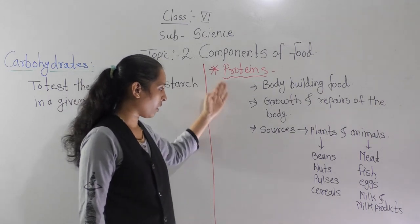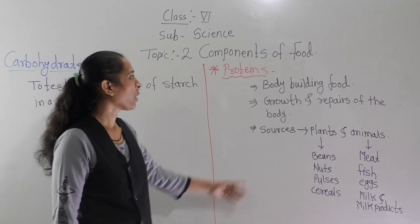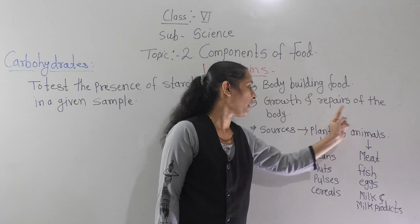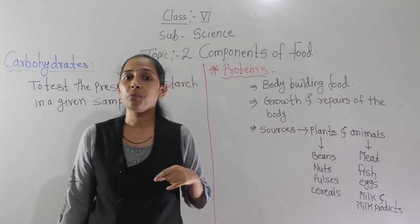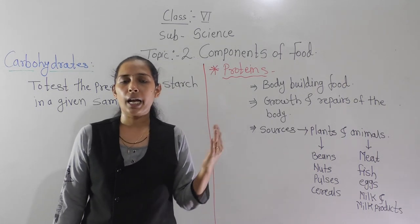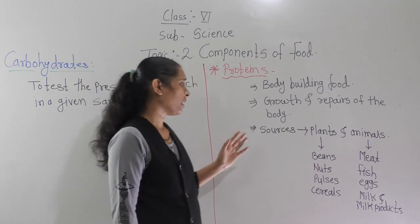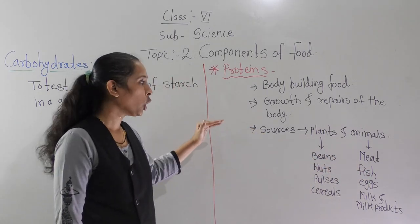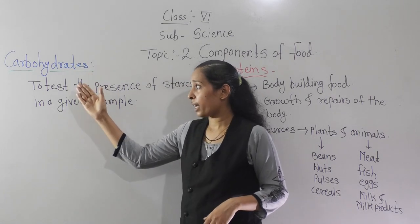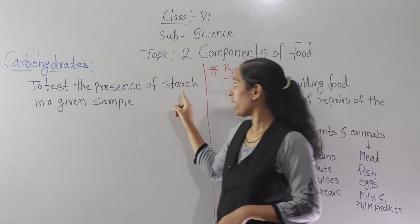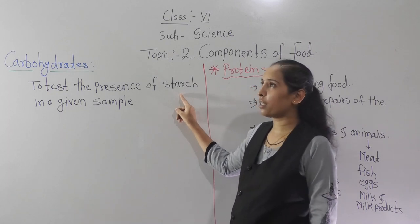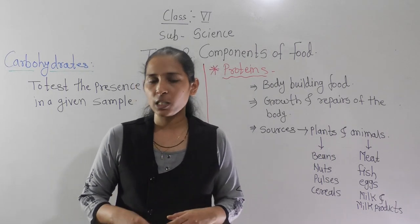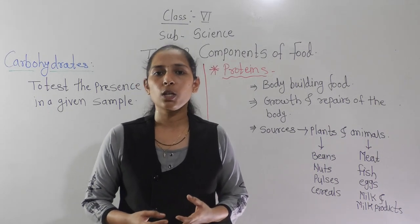Let us revise what we discussed about proteins. Protein helps to build our body, so it is called body building food. It is necessary for growth and repair of the body, and is required in more amounts during the growing stage of children, in pregnant women, and in persons recovering from illness. There are different sources of protein — plant sources and animal sources. We also discussed the test for carbohydrates: we can find out whether a food substance contains starch using iodine solution. Thank you, and we will discuss the next point of the lesson tomorrow.